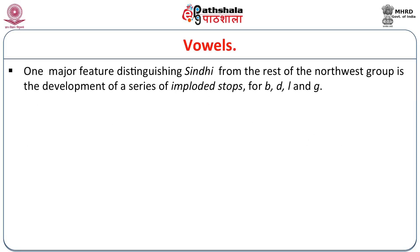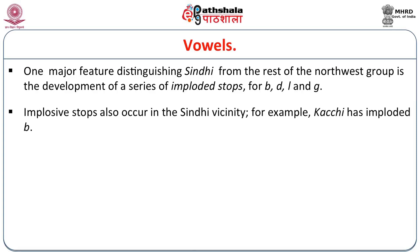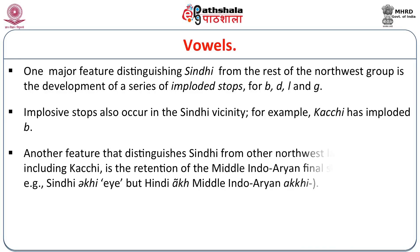One major feature distinguishing Sindhi from the rest of the Northwest group is the development of a series of implosive stops like ḅa, ḍa, etc. Implosive stops also occur in the Sindhi vicinity, like in Kachi and Lahanda. Another feature that distinguishes Sindhi from other Northwest languages, including Kachi, is the retention of the Middle Indo-Aryan final short vowels: Sindhi — akhi (eye), but Hindi — ankh; Middle Indo-Aryan — akhi.